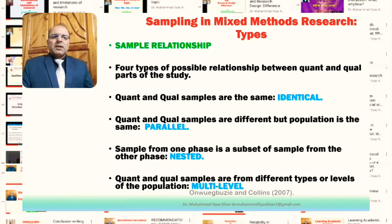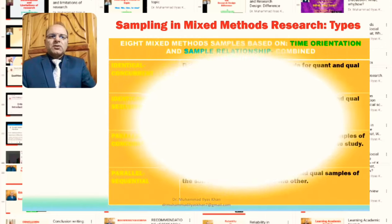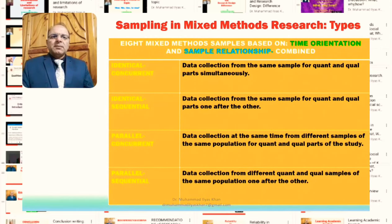In the multilevel type, the population is generally the same but has different categories, and the quantitative and qualitative samples are drawn from those different categories or levels inside the population. These are the four broad categories in terms of sample relationship. On the basis of the two types — time orientation and sample relationship — we have an overall of eight subcategories of sampling in mixed method research.